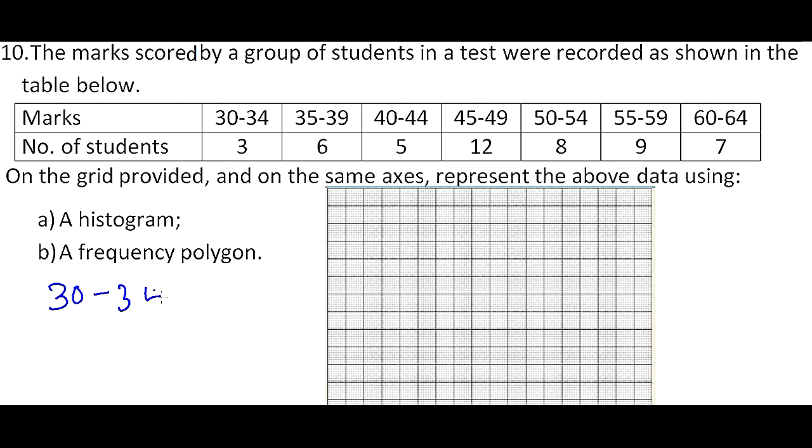The limits are 29.5 to 34.5, so those are the limits. Because our data does not start from 0, we put a zigzag line to indicate that our data does not start from 0. So here we will start with 29.5, the next one is 34.5.